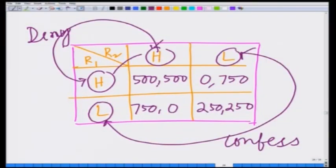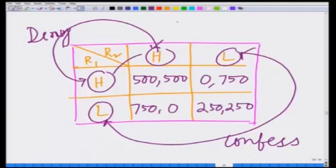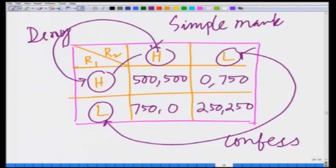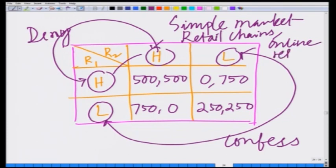This is a simple example of a market equivalent to a Prisoner's Dilemma. This simple market example helps us understand key principles — we will look at more complicated market examples later on, but this simple example itself yields valuable insight. It can be used to model a competition between two retail chains or online retail stores.